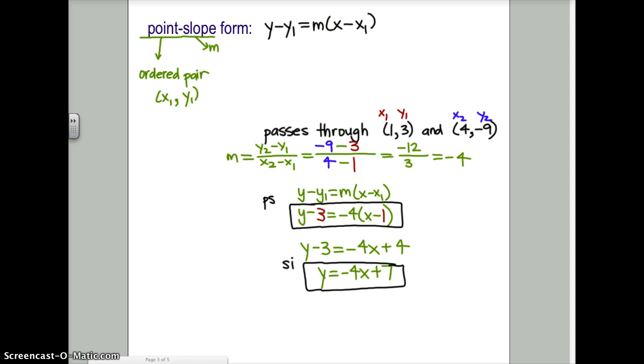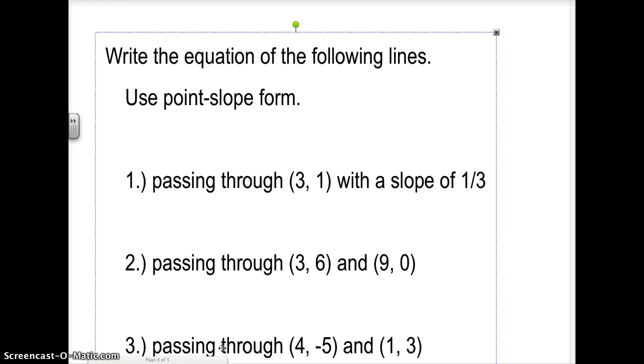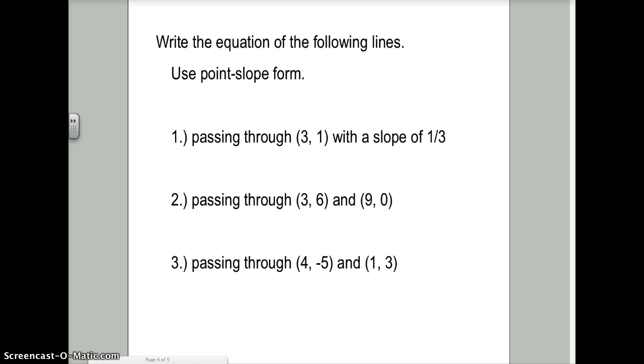Point-slope form versus slope-intercept form, they graph the same line. It's just a matter of the notation used and how it's written and what it looks like. If we would have chosen that 4, negative 9, we would get the same answer. We would still get y equals negative 4x plus 7. So what I want you to do is I want you to try a couple. There's three for you to try. The first one spells it out kind of for you. It says passing through a point and it has the slope. So you have point and you have slope. The second one gives you two points, no slope. You need to find the slope. The third one gives you two points and then this one's a little bit trickier for actually working with it. So give these a try. Start by finding the slope if you need it.